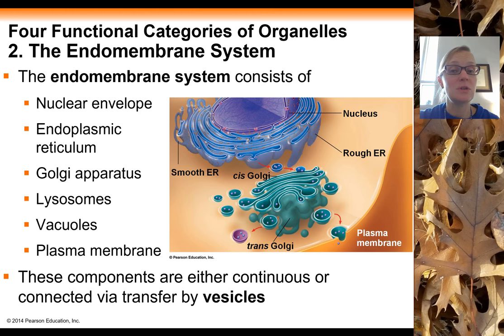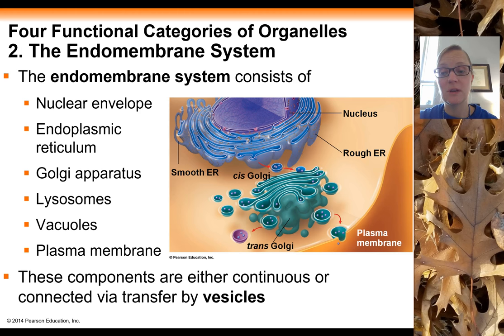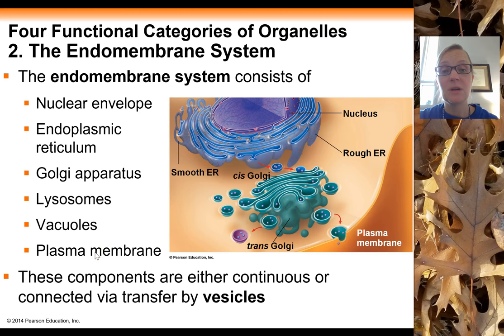This slide shows you which organelles and membranes are part of this endomembrane system, pretty much in order. We start with the nuclear envelope, followed by the endoplasmic reticulum, the Golgi apparatus, lysosomes, vacuoles, and the plasma membrane. We're going to discuss each one in more detail, starting in the middle of the cell where the nucleus is.